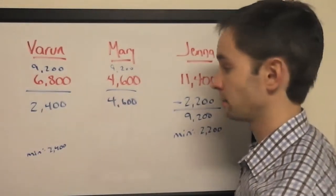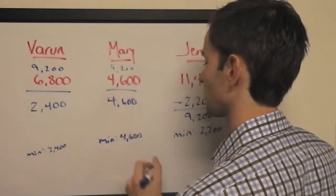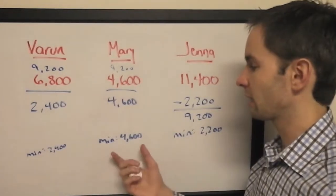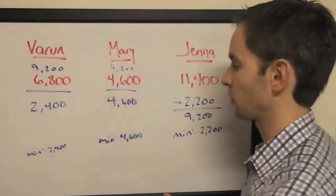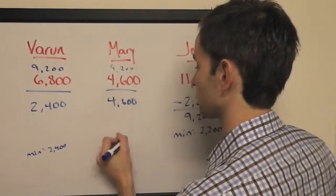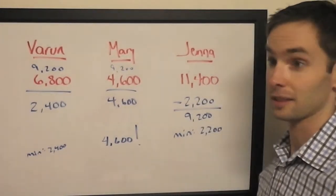Now this should be a warning sign, because Mary can't wager more than $4,600, and since that's her minimum, she has to wager $4,600.